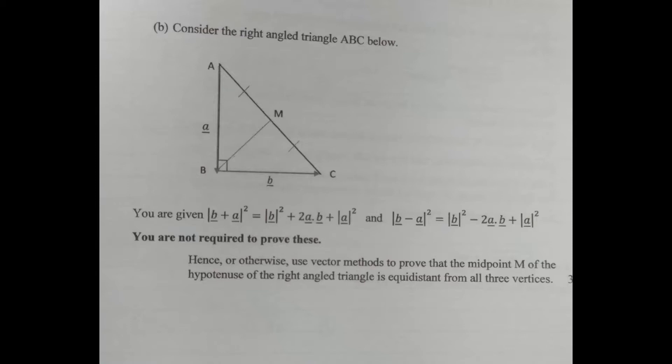So we're told hence, either using these results that we've been given or otherwise using another technique, use vector methods to prove that the midpoint m of the line ac, the hypotenuse, is equidistant from all three of the vertices. So the distance between m and a, and the distance between m and c, and the distance between m and b are all equal. Now we're already told that m is the midpoint of a to c, so we know those two distances are equal.